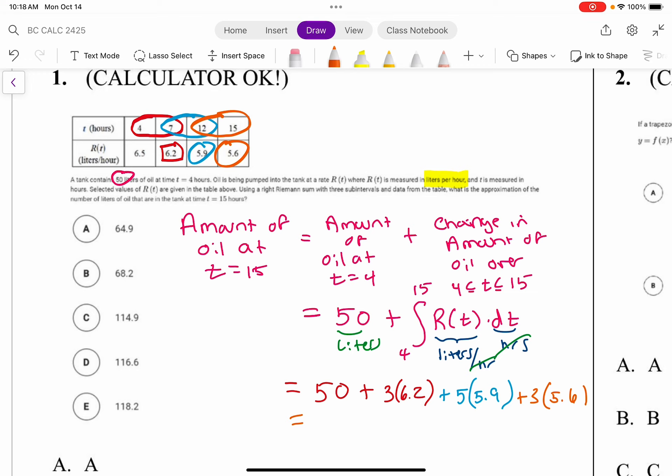Okay, and then we add 50, so that was 64.9 plus 50 gives us 114.9 liters in total. So that would be our answer.